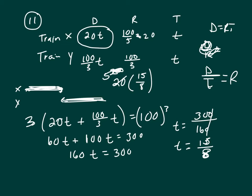So that's 75 over 2, and half of 75 is 37 and a half. So he traveled 37 and a half miles. Train X traveled 37 and a half miles.